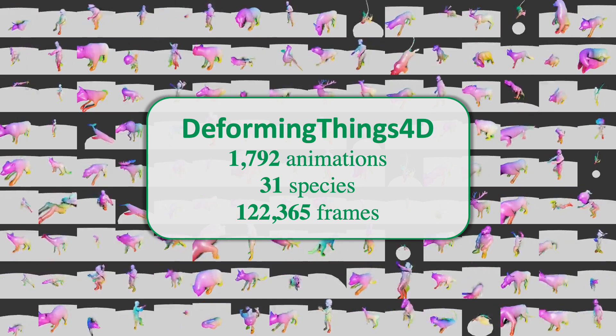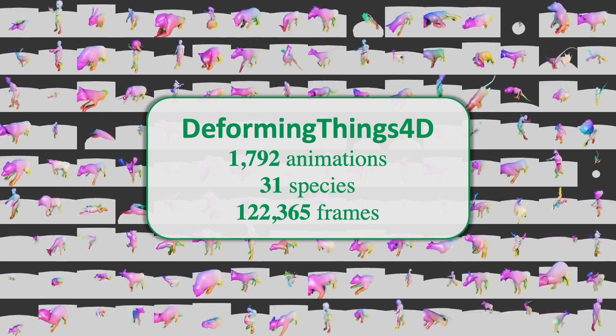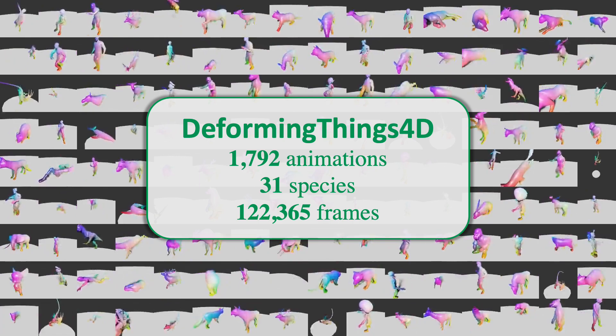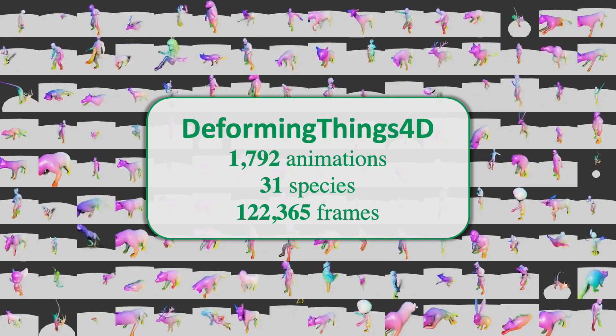In total, Deforming Things 4D contains 1,972 animations, spanning 31 species with 122,365 frames.